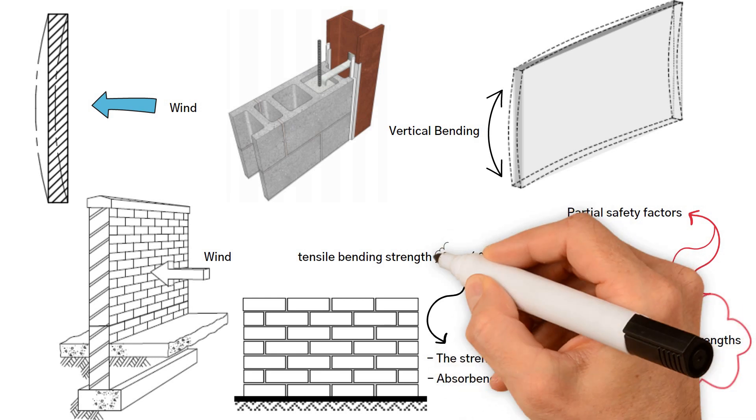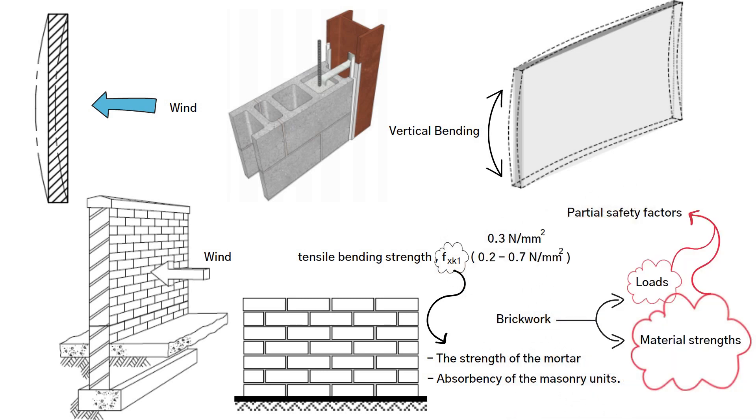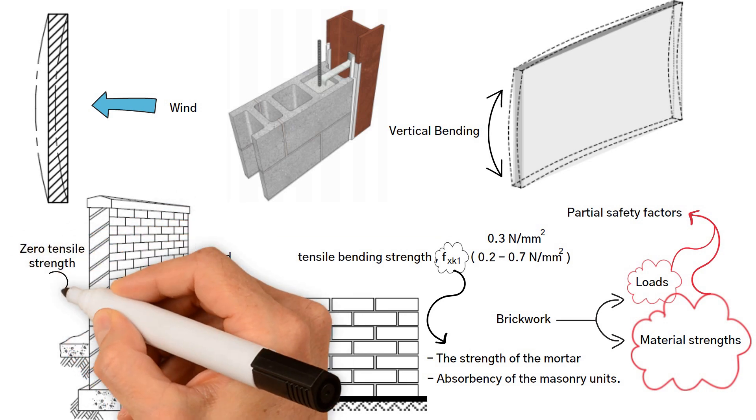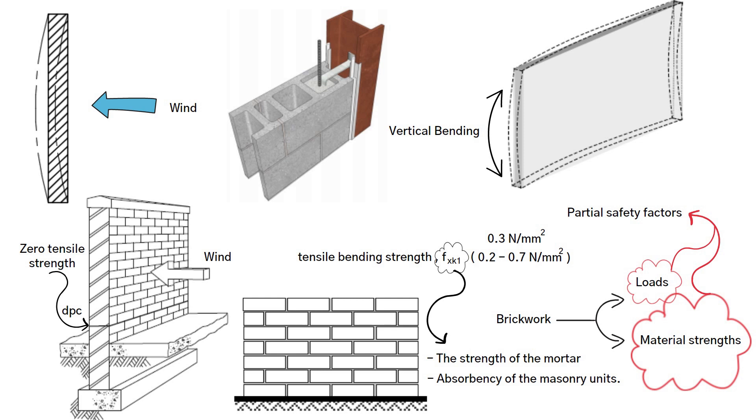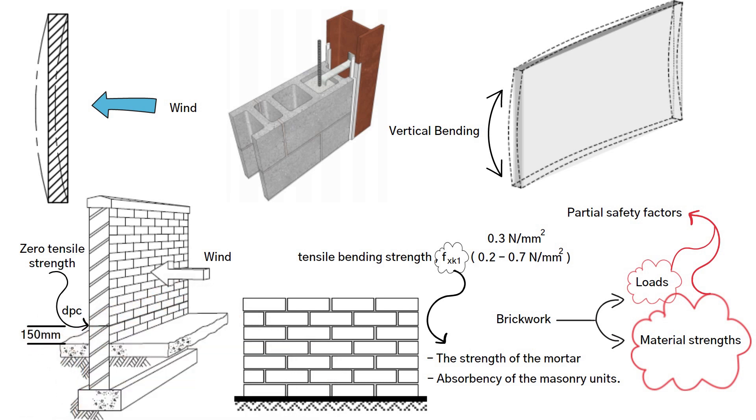A typical value of tensile bending strength is 0.3 newton per millimeter squared. A situation where masonry has zero tensile strength occurs at most damp-proof courses. A damp-proof course, or DPC, is an impermeable waterproof layer.